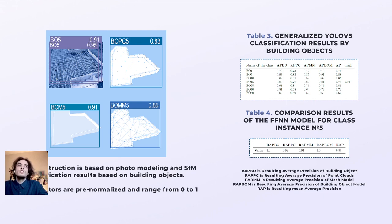Table 3 shows the generalized YOLO v5 classification results by building objects. The indicators range from 0 to 1 and are pre-normalized. Table 4 shows the feed-forward neural network model results. As a result, the acquired values demonstrate the conformity of classified architectural objects and their derivative models to the required requirements.